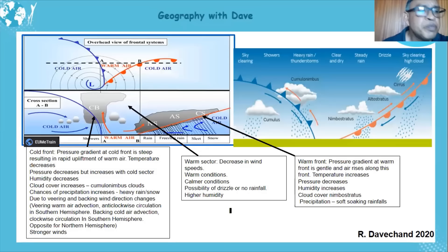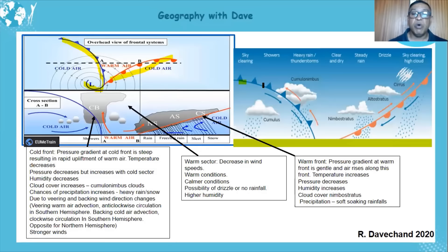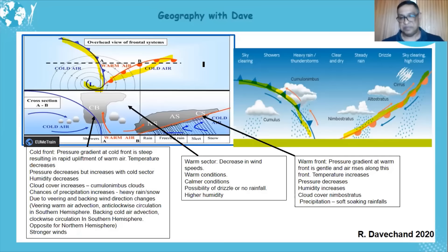Now let's look at the cross section. We can see the cold front and warm front. Depending on where the examiner asks you to draw the cross section — if the section goes from A to B and there's no occlusion in that area, you do not draw an occluded front. Watch carefully where the cross section line is drawn.